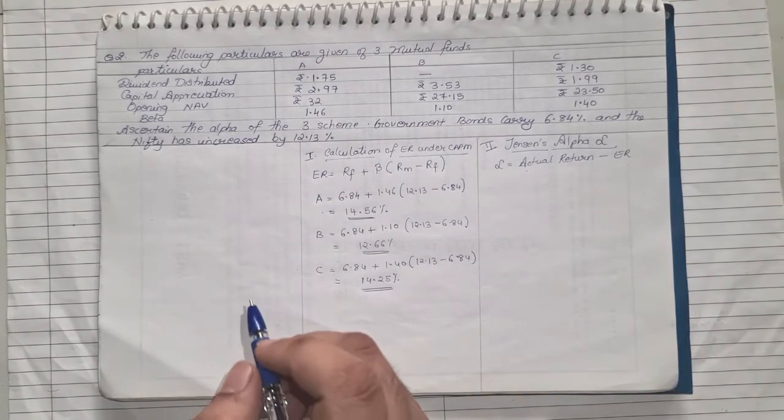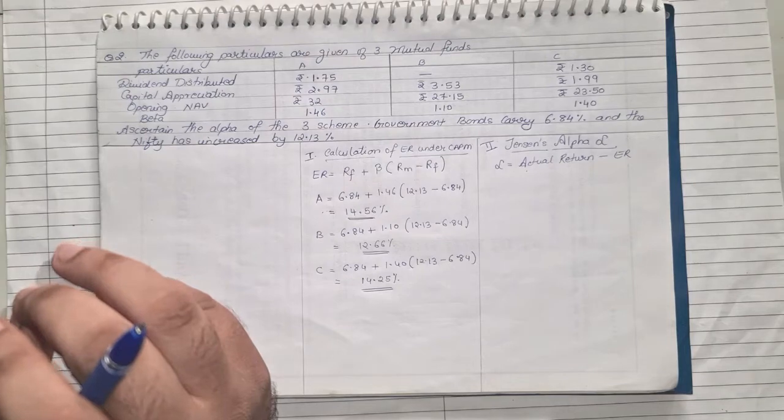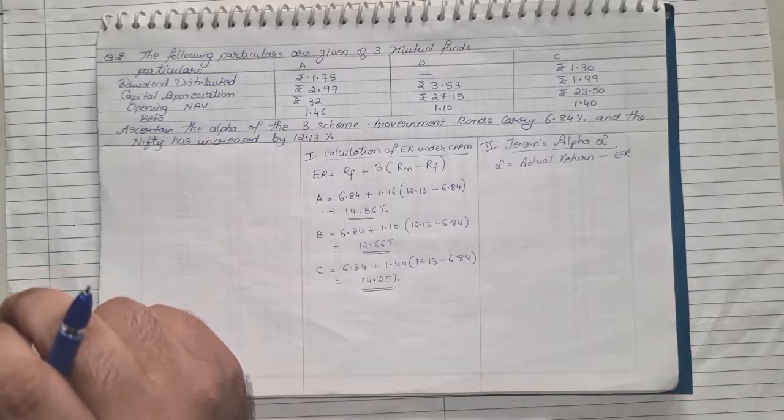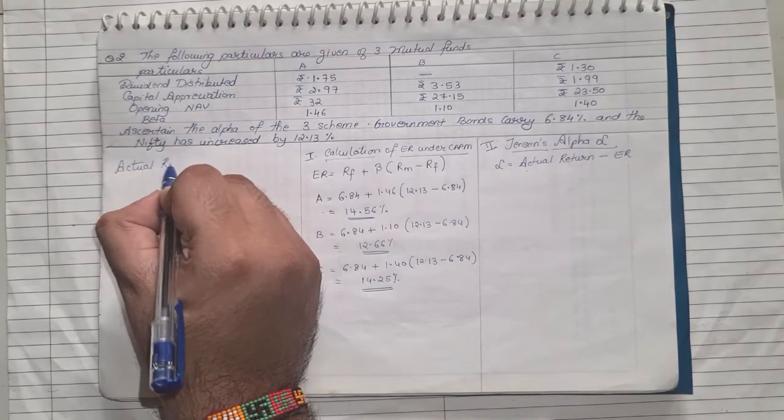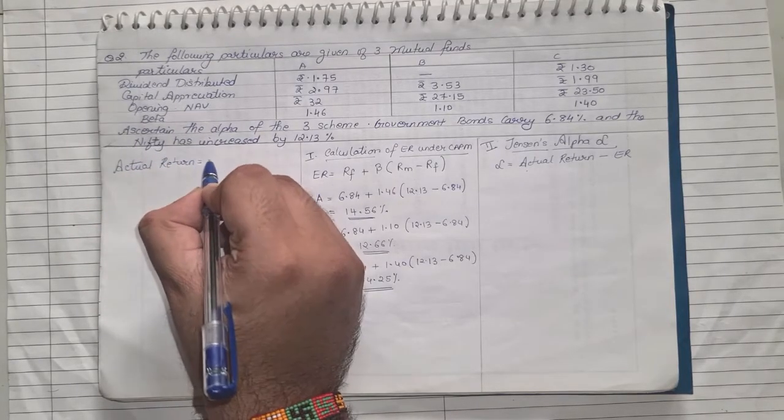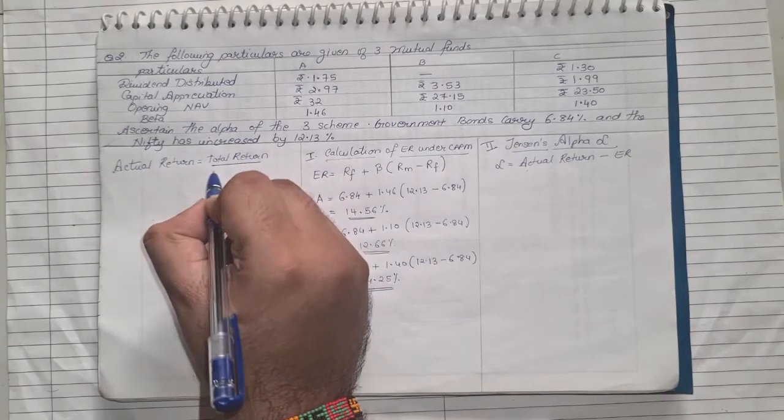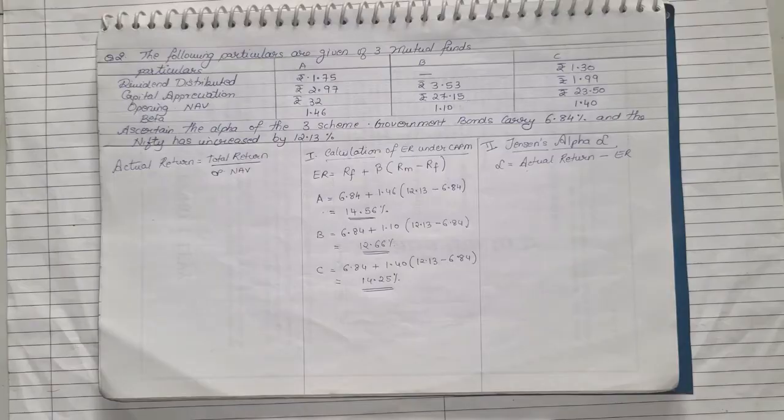Now remember, actual return's formula is total return upon opening NAV. Opening NAV is given to us, and total return directly isn't given, so we need to first find that.